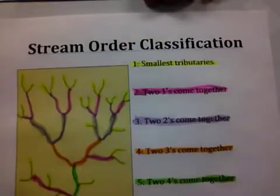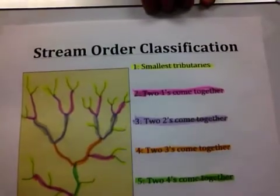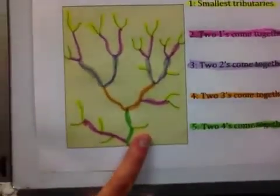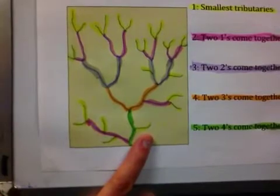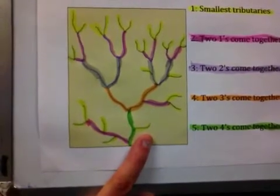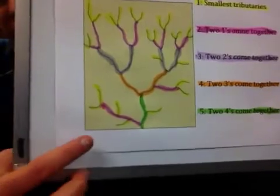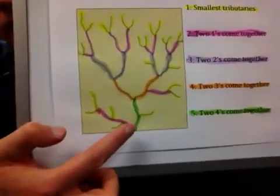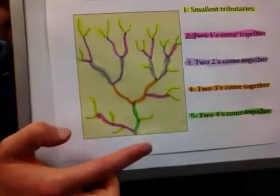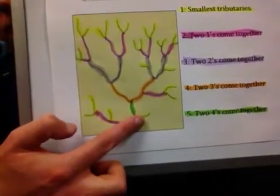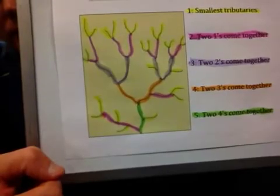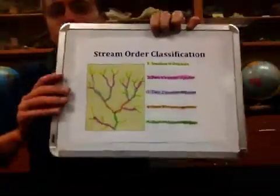As you can see down towards the bottom, you can have first order streams flow directly into a fifth order. They don't have to flow into the next number higher. We are primarily looking at the tributary and what it feeds into. So don't think that only fourth order streams can flow into a fifth order — a fifth order could have a first or second order flowing into it. It all just depends on the layout of the stream. Expect to do something like this in an intro geology lab.